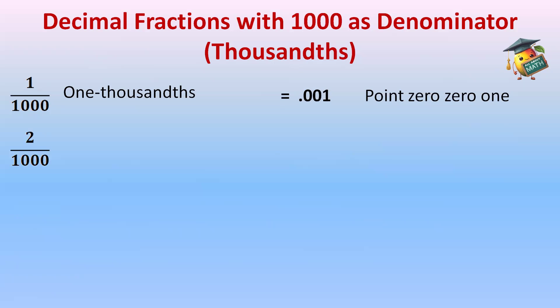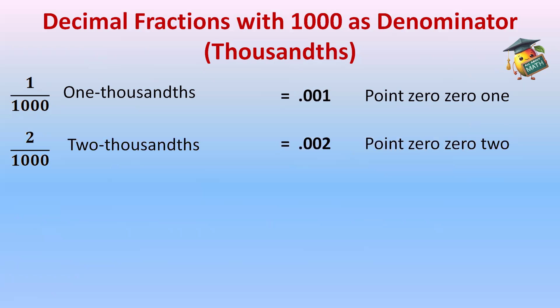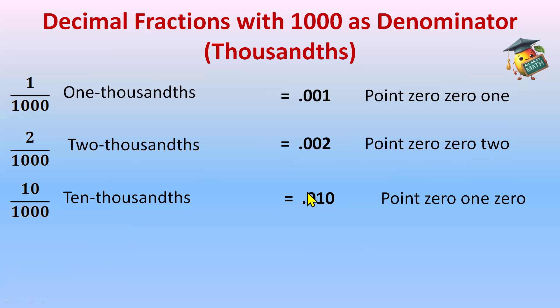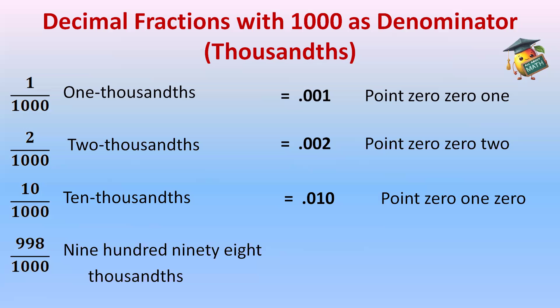Let's see another example: 2 by 1000 — it's 2 thousandths, and in decimal form we write 0.002, or in word form we call it 0.002 only. 10 by 1000 — we'll call it 10 thousandths, and we'll say 0.010. After the decimal three digits will come here because we have three zeros in the denominator, so we insert a zero to get three digits. Next, 998 by 1000 — we can say 998 thousandths — the decimal form will be 0.998, and in word form we also write 0.998. If you write it incorrectly, it will be wrong.